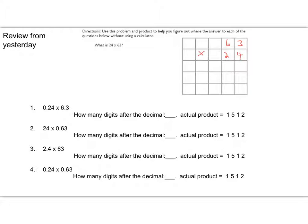I have 4 times 3 is 12, I carry the 1. 4 times 6 is 24, plus 1 is 25. Then I put a zero in because I'm now multiplying by 20.